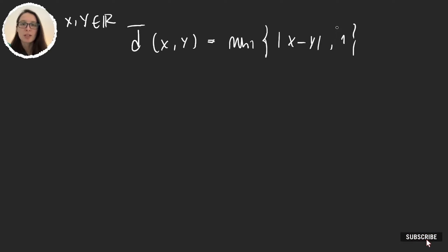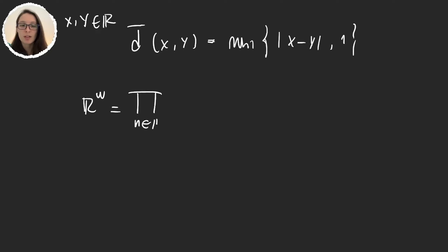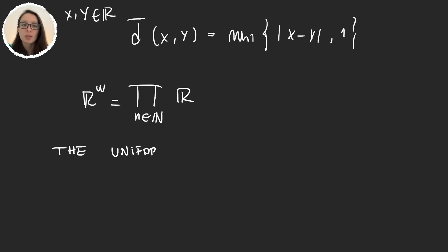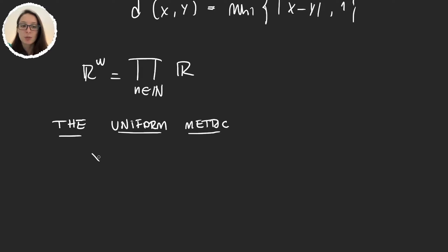Now the idea is to define a new topology in R^ω. Remember R^ω is just the product of countably many copies of the real numbers. We will define a metric in R^ω and then use the topology induced by that metric. Given x and y, two elements in R^ω,